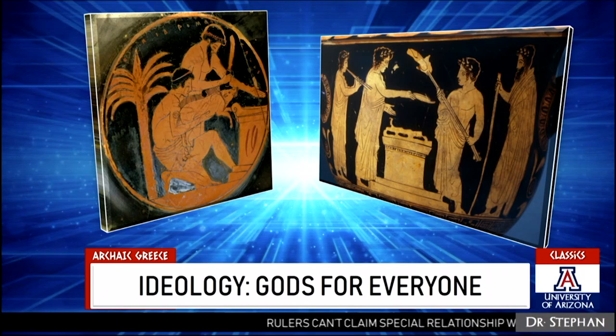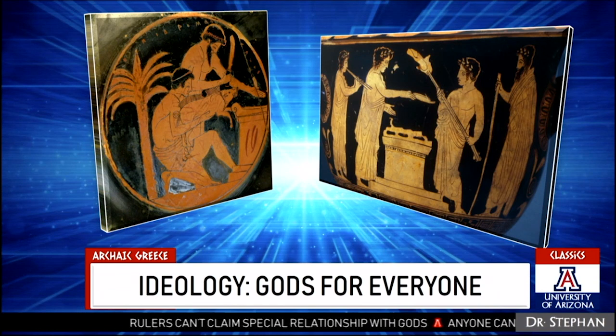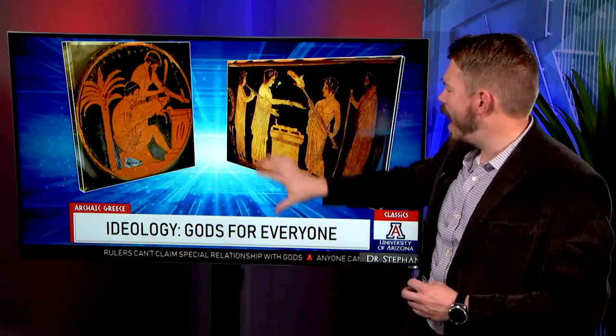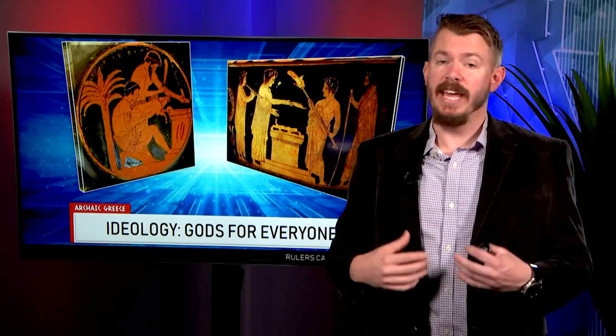The third reason moving towards equality is the Greeks' unique conception of the gods and religion. The Greeks believe that nobody can hold a monopoly on their relationship with the gods. At any point, any Greek citizen can go make a sacrifice to one of the gods. When Herodotus goes east into the Persian Empire, he's mystified that regular people can't make sacrifices — you have to go to a priest. When the monarch controls the priesthood, he controls religion. In Greece, anybody can worship at any point, which means political leaders can't control religion.